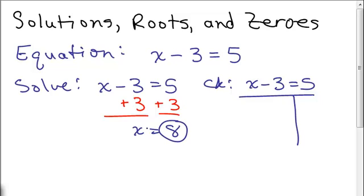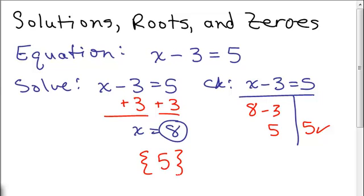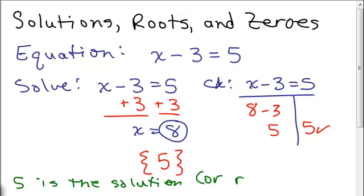We plug in 8 for X on the left-hand side and do order of operations: 8 minus 3. The right-hand side is already simplified to a number. We get that yes, this is the solution — that's what we're looking for. Another word we use for solution is root. We can say 8 is the solution, or the root, of the equation. Root is basically another word for solution.